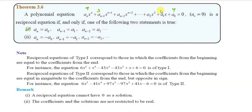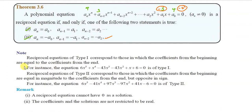The second statement corresponds to coefficients equal to 3. For another type, a_n gives minus 4, then minus 3 — this is Type 2. A reciprocal equation of Type 1 corresponds to those in which coefficients from the beginning are equal to coefficients from the end.